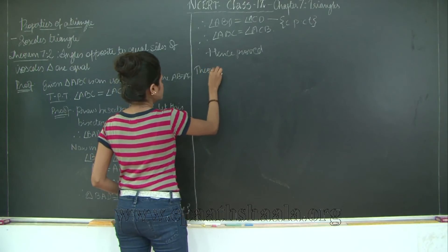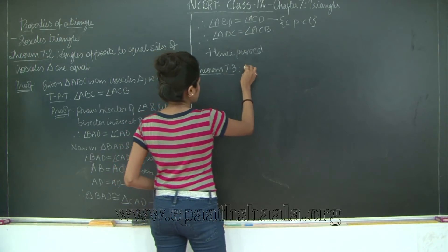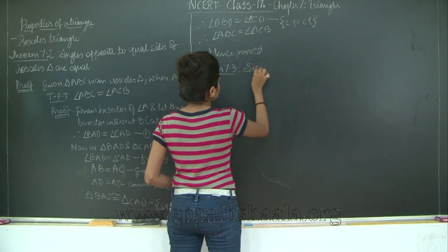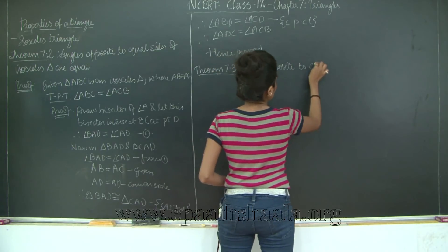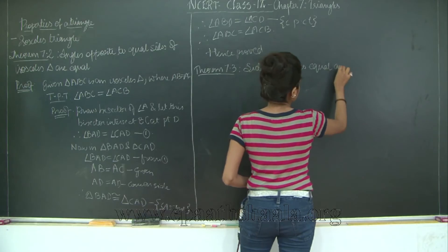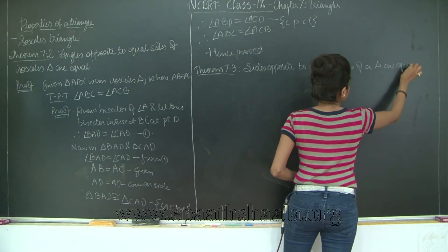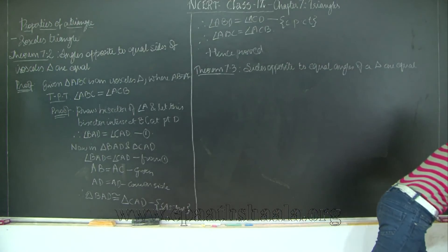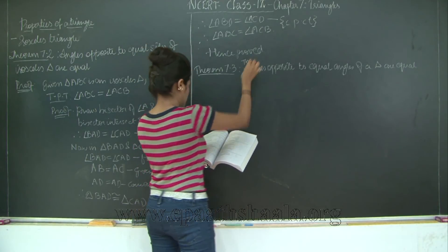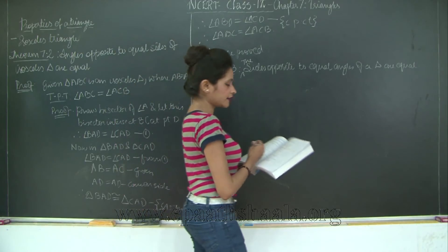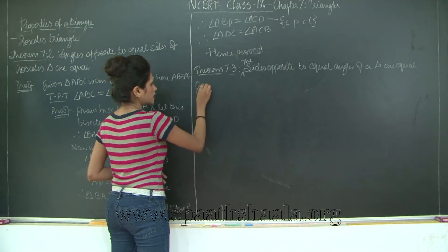So let us write down the theorem. This would be Theorem 7.3: sides opposite to equal angles of a triangle are equal. Let us just confirm the statement with the textbook. The sides opposite to equal angles of a triangle are equal. Note that this proof has not been given in your textbooks, however we will go ahead and prove it.